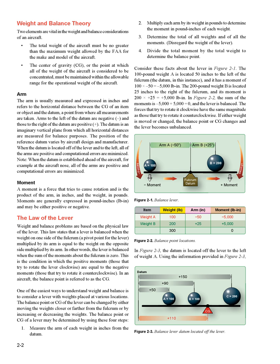Arm: the arm is usually measured and expressed in inches, referring to the horizontal distance between the CG of an item and the datum — a point from which all measurements are taken. Arms to the left of the datum are negative, and those to the right are positive. The datum is an imaginary vertical plane from which all horizontal distances are measured for balance purposes.